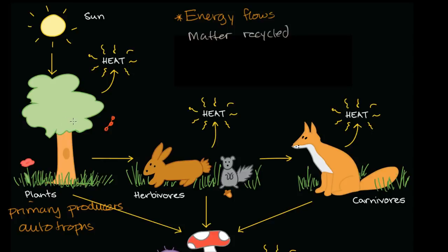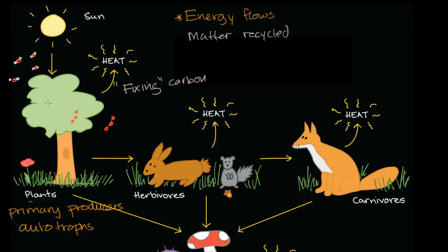Where did all these carbons come from in this tree? The carbon is coming from the air — our air has carbon dioxide in it, with two oxygens for every carbon. The whole process of photosynthesis is about fixing that carbon — fixing it from a gaseous form, when it's part of carbon dioxide, into the structure of the plant, into the biological molecules of the plant, storing that energy.